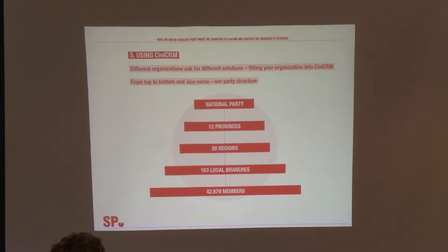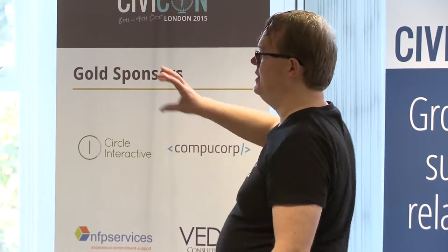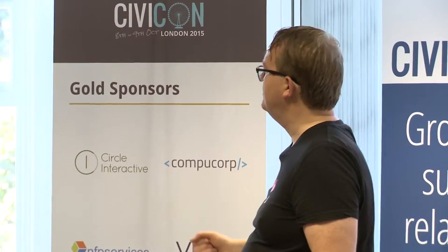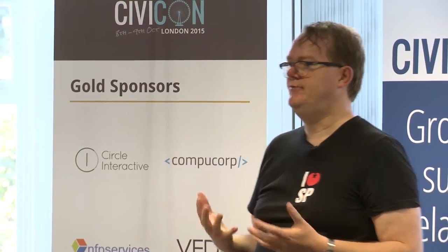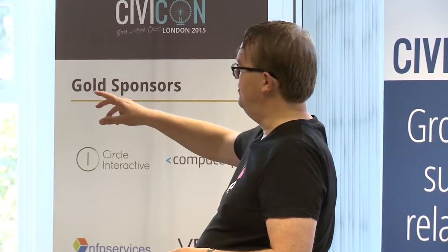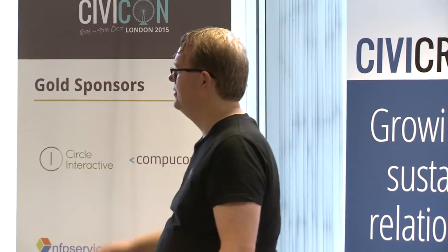CiviCRM works differently for different organizations because organizations all have different demands, setups, and structures, so you have to tell CiviCRM how your party is organized. This is a rough structure of how our party is organized: we have the national party, then 12 provinces in the Netherlands, divided into 20 regions, and we have about 163 local branches. All members belong to one of those local branches.